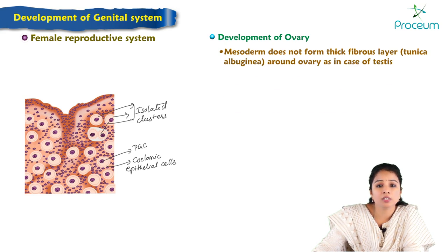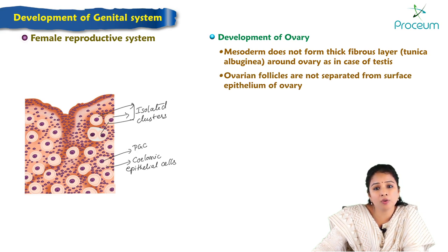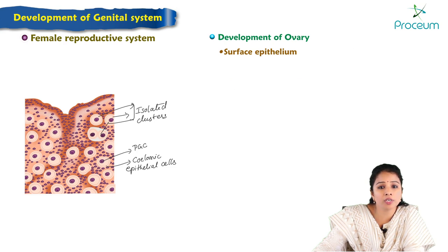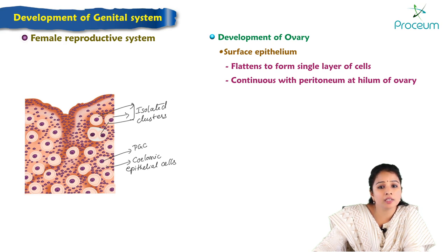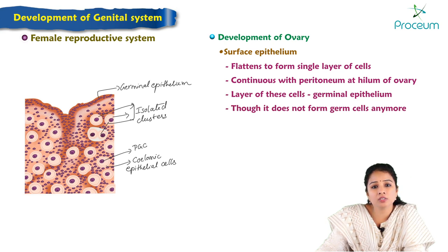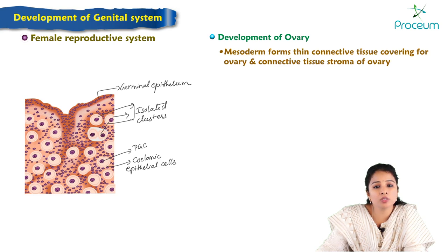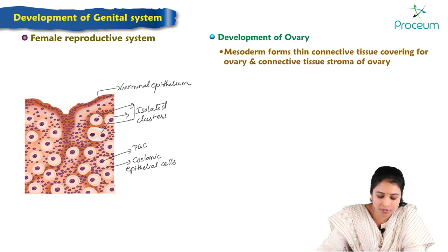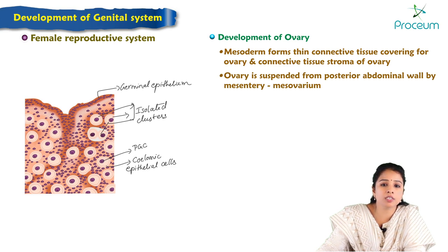The mesoderm does not form a thick fibrous tunica albuginea around the ovary as it does around the testis. Thus ovarian follicles are not separated from the surface epithelium. The surface epithelium of the ovary flattens to form a single layer of cells continuous with the peritoneum at the hilum of the ovary; this layer is called the germinal epithelium. The mesoderm forms a thin connective tissue covering the ovary and the connective tissue stroma of the ovary, and the ovary is suspended from the posterior abdominal wall by a mesentery called the meso-ovarium.